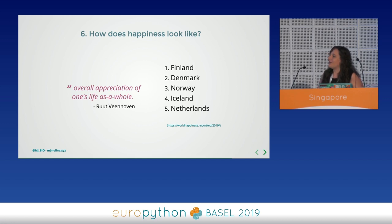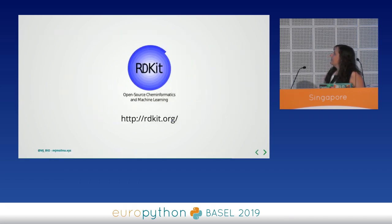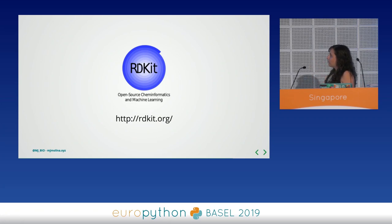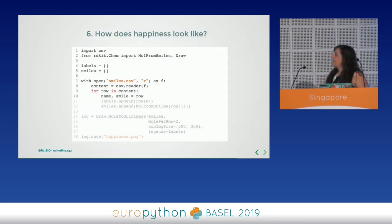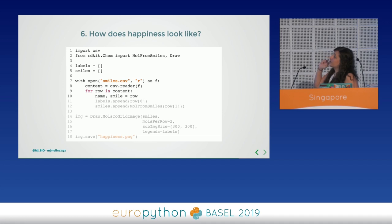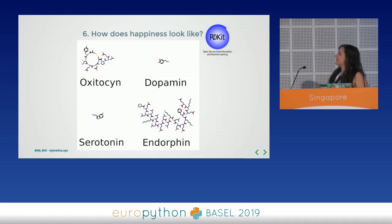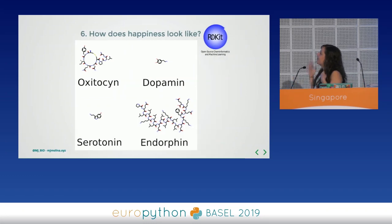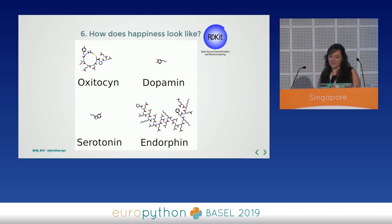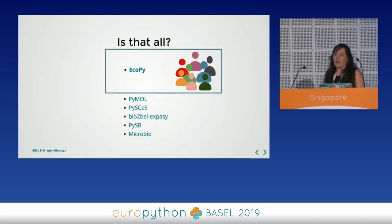Imagine that you want to visualize happiness. We can use this model called RDKit, and in a really easy way we can use SMILES — the chemical formula notation — transform these formulas, and visualize happiness. Here we have the four hormones in humans that are related with happiness.